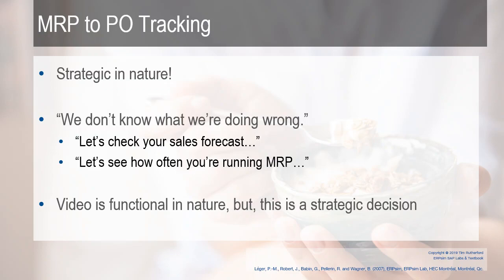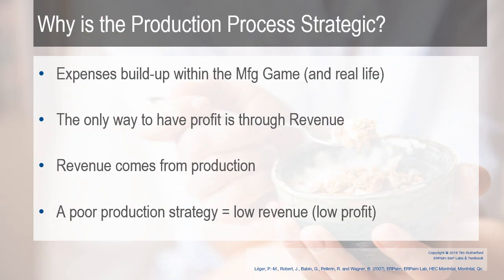Realize this video is functional in nature, but the decisions you're making — how often you run MRP — all of this is strategic in nature. Why is the production process strategic? Expenses build up within the manufacturing game and in real life organizations, and the only way to have profit is through revenue. Revenue, because you start with no inventory, comes from production. So a poor production strategy equals low revenue or low profit.